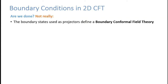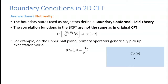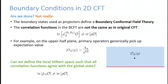Are we done knowing about Cardy states and boundary states? Not really. The problem is that boundary states are used as projectors to define a boundary CFT, but correlation functions in the boundary CFT are not the same as in the global state. For example, in the boundary CFT on the upper half-plane, primary operators generically pick up one-point functions, whereas primary operators have no one-point functions in the vacuum of a CFT. What I want to do is define a local Hilbert space such that all correlation functions — all one-point functions and arbitrary higher-point functions — agree with the global state.